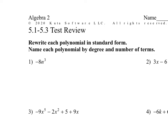Okay, Kervin, what's our degree? What do we call something with a degree of three? Cubic. And how many terms does it have? One term. And what do we call something with one term? Monomial.